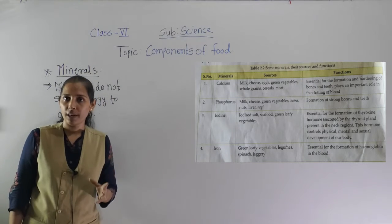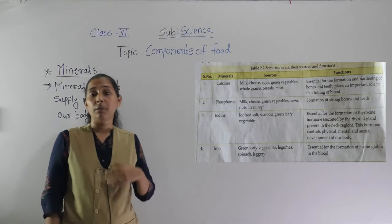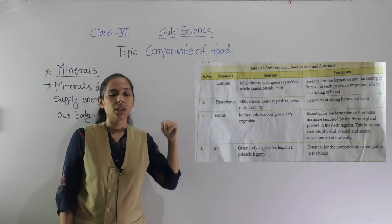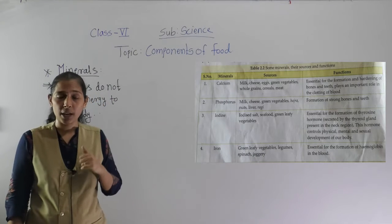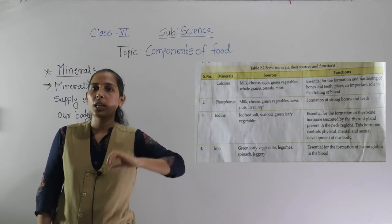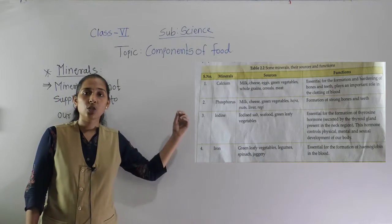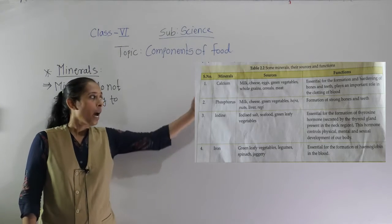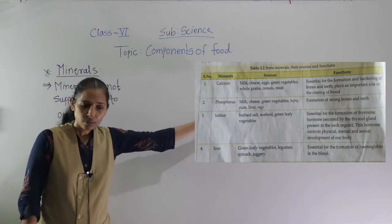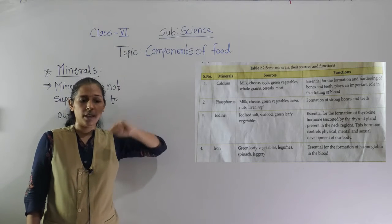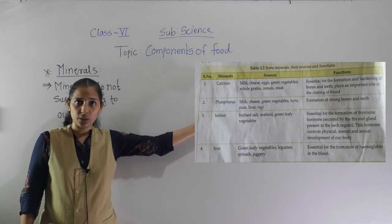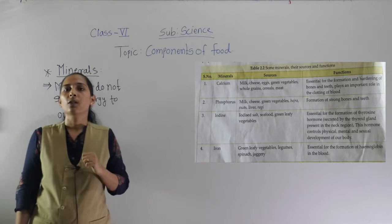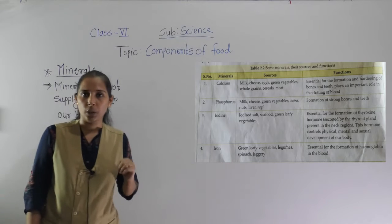The next very important mineral is iodine. We get iodine mainly from iodized salt. Seafood and green leafy vegetables are also sources of iodine.